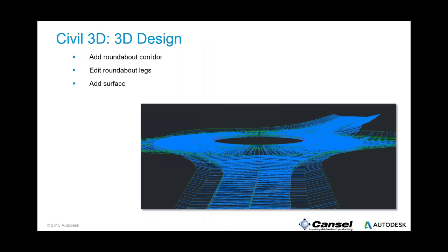On to three dimensions. Vehicle Tracking is going to create our corridor for us. When we edit the roundabout legs the corridor automatically gets rebuilt, and once satisfied we can create a design surface — a final surface.